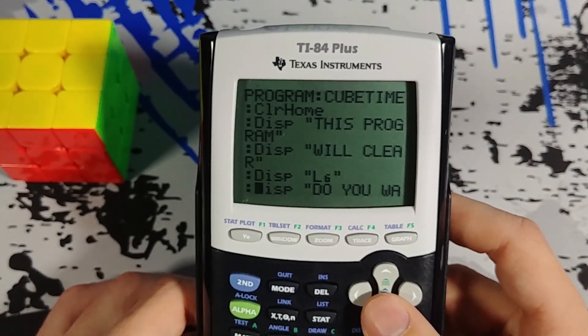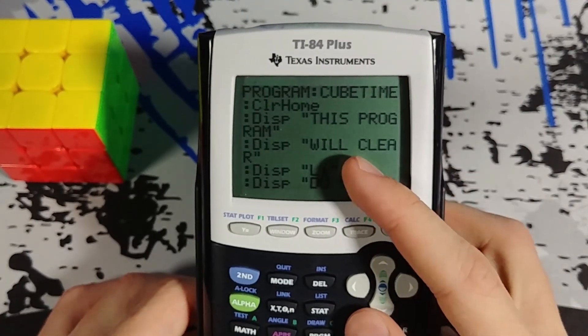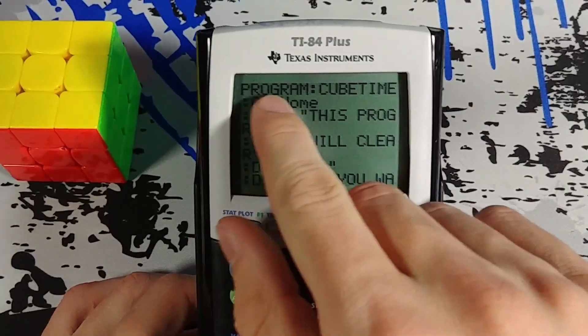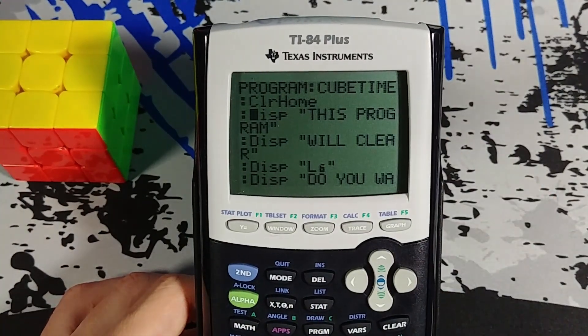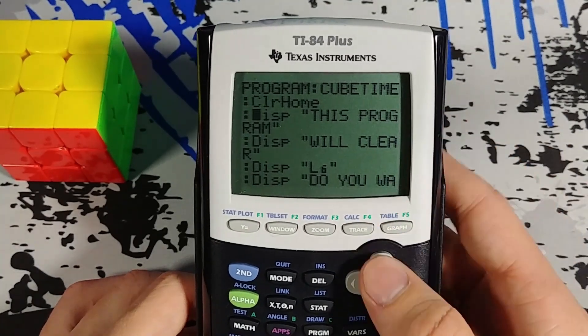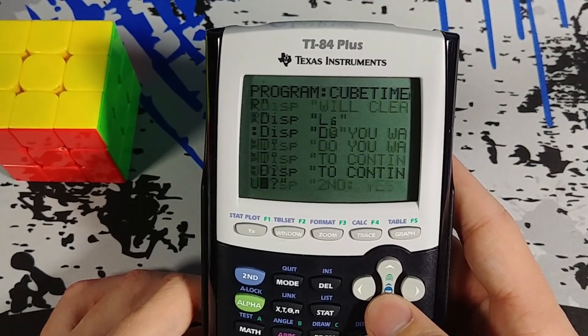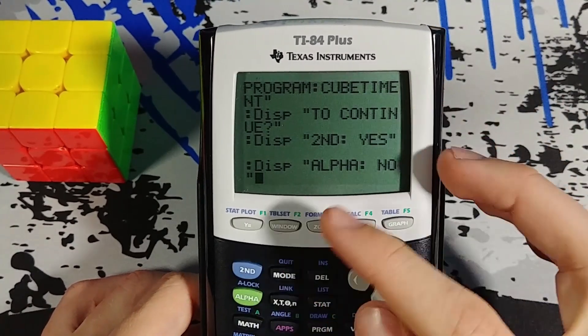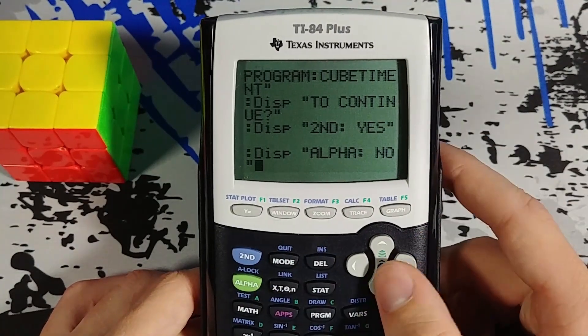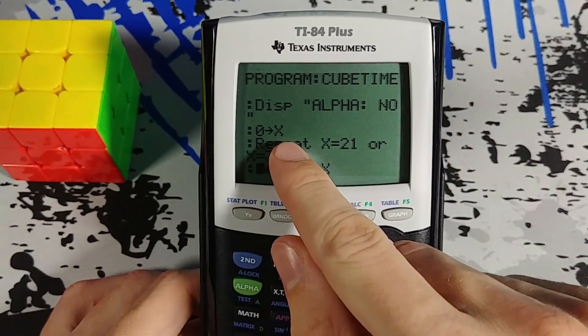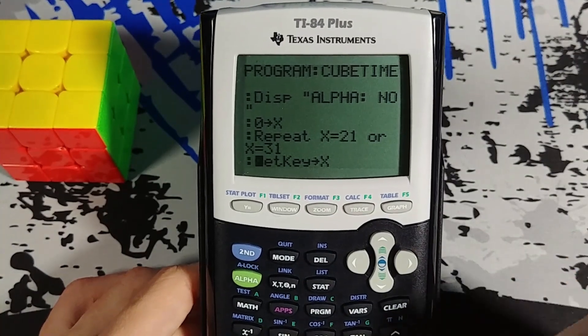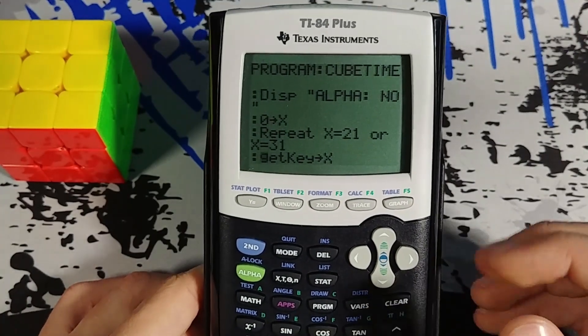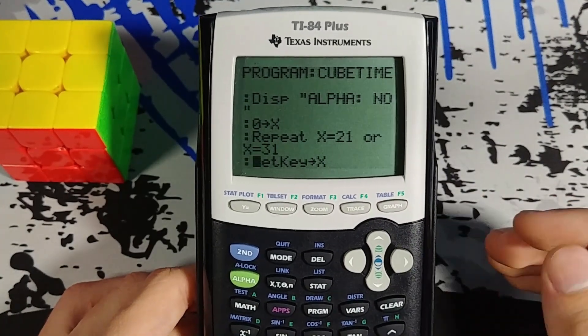And then here I have these display functions which are going to display the text. I have to be careful to do it a little bit at a time because it can only display 16 characters across the top of the screen. So I have to do it in segments. And basically it's going to ask me if I want to continue. And then it's going to give me my two options. So the second button is going to be yes and my alpha button is going to be no. And then I'm going to store zero into x. What this is saying is that it's setting my x variable to zero. Because if I don't do that, whatever my x variable is, it's going to keep that in the program.